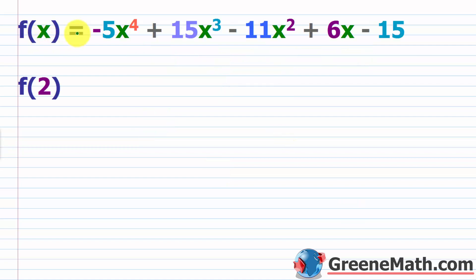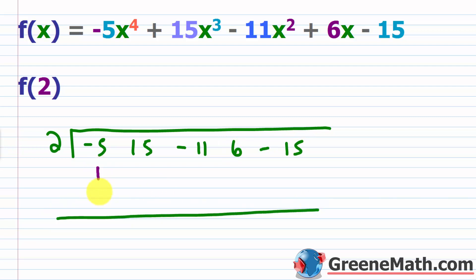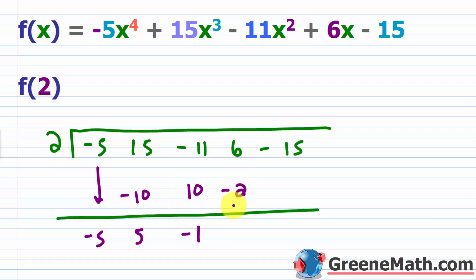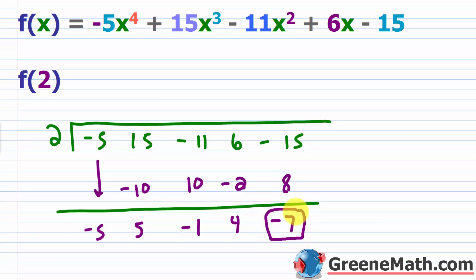Let's look at more examples. We have f of x equals negative 5x to the fourth power plus 15x cubed minus 11x squared plus 6x minus 15. We want to find f of 2. I'll put 2 here and grab my coefficients: negative 5, 15, negative 11, 6, and negative 15. Performing synthetic division: 2 times negative 5 is negative 10; 15 plus negative 10 is 5; 2 times 5 is 10; negative 11 plus 10 is negative 1; 2 times negative 1 is negative 2; 6 plus negative 2 is 4; 2 times 4 is 8; negative 15 plus 8 is negative 7. So f of 2 is negative 7.